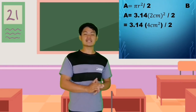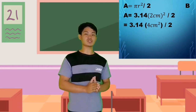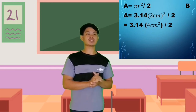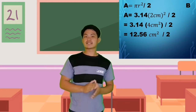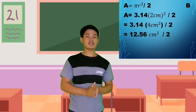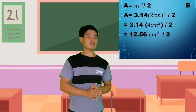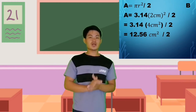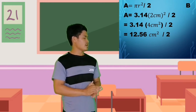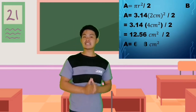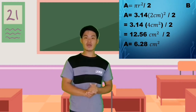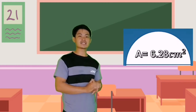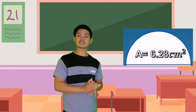So, area equals 3.14 times 2 cm squared divided by 2. That gives us 3.14 times 4 cm squared divided by 2, which equals 12.56 cm squared divided by 2, giving us 6.28 cm squared. Thus, the area of shape B is 6.28 cm squared.